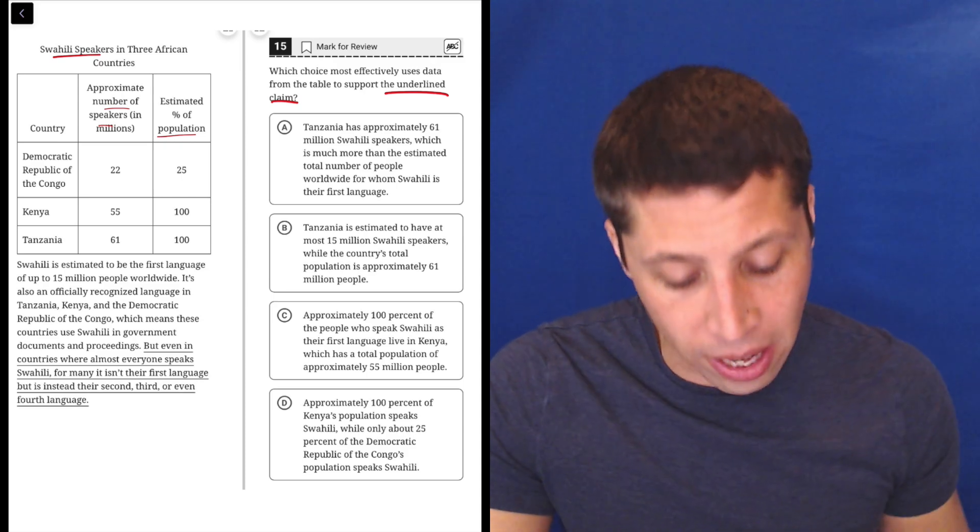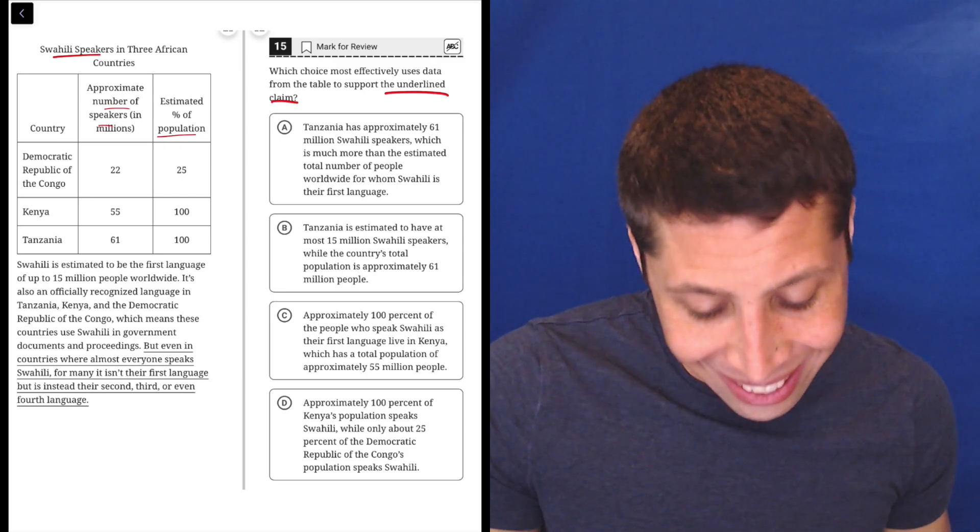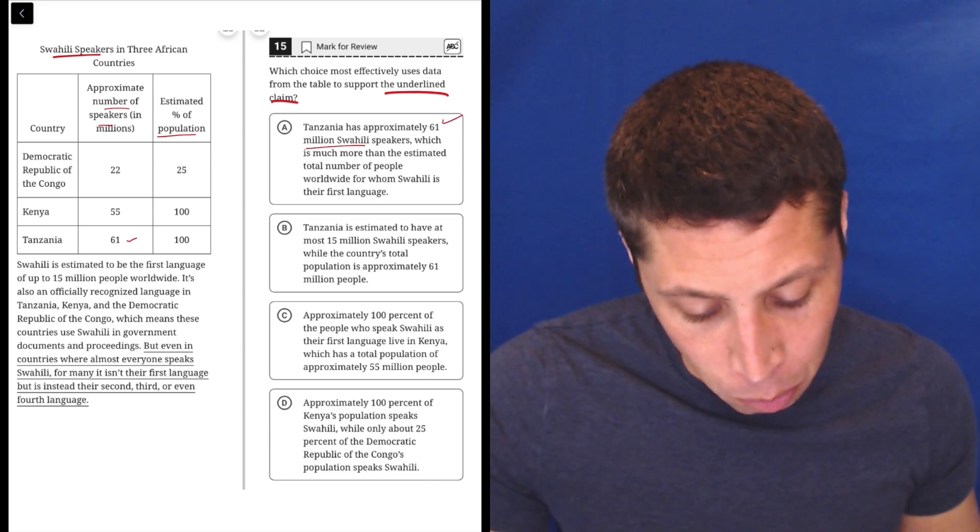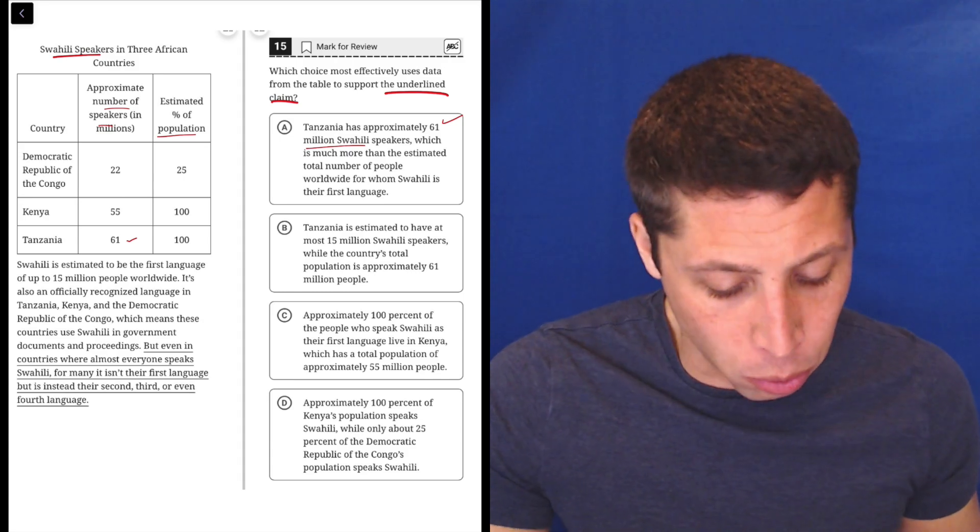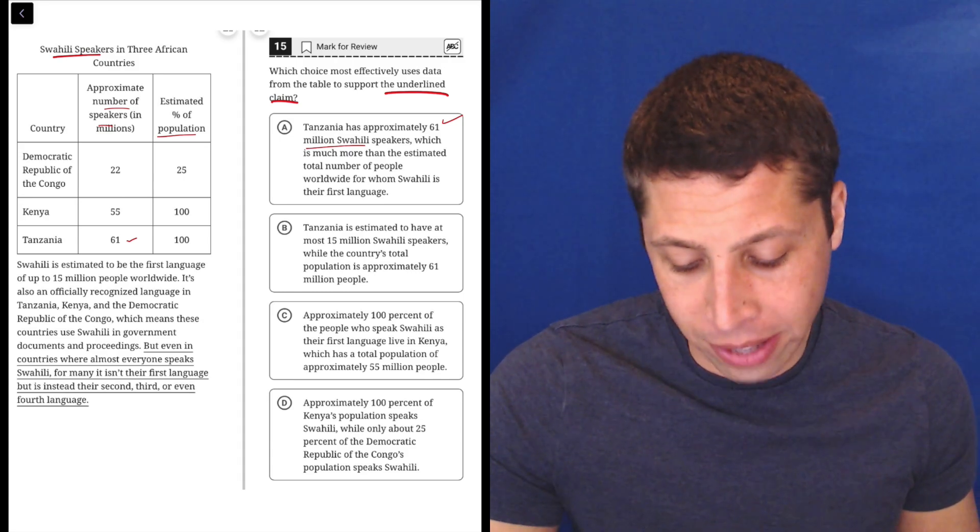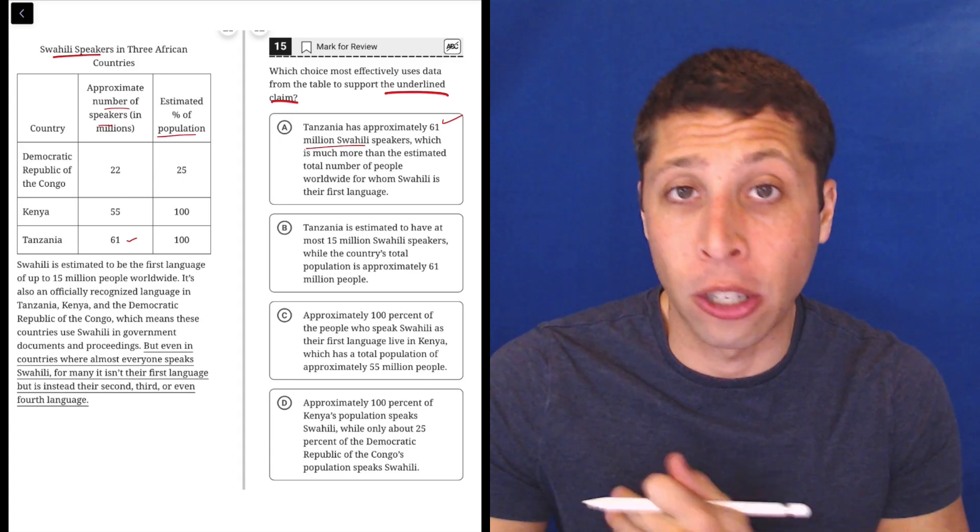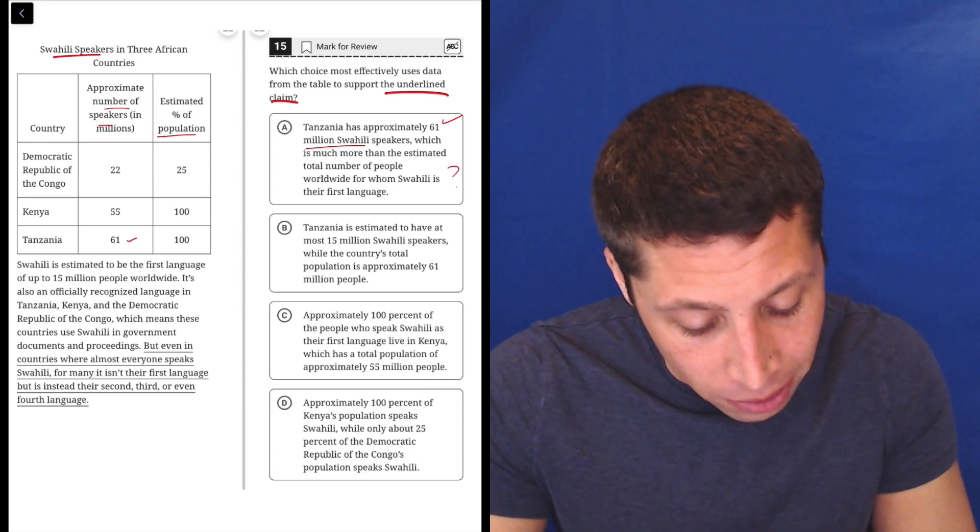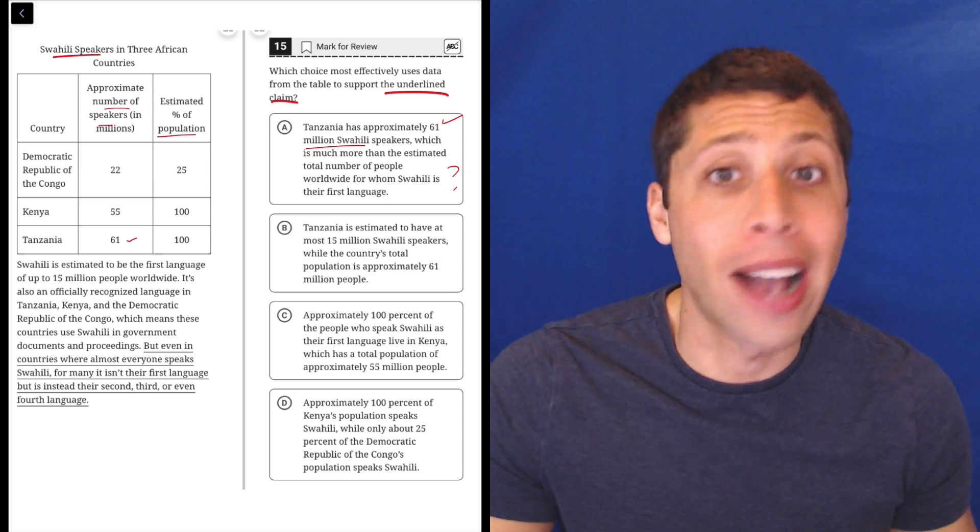So choice A, Tanzania has approximately 61 million Swahili speakers. Well, that seems true, so that's okay. Which is much more than the estimated total number of people worldwide for whom Swahili is their first language. Well, that information is not on the chart. It's probably in the passage and I can skim for it, but for now, I'm just going to leave it as a question mark. I don't know if that is factually true or not.